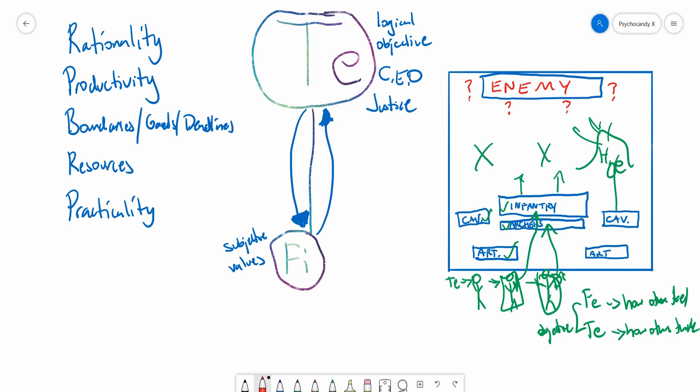So taking this into consideration, a Te dom, because they're so logical, because they're so objective, they can sort of put themselves in the mindset of the enemy and completely objectively think about what the enemy would want to do.